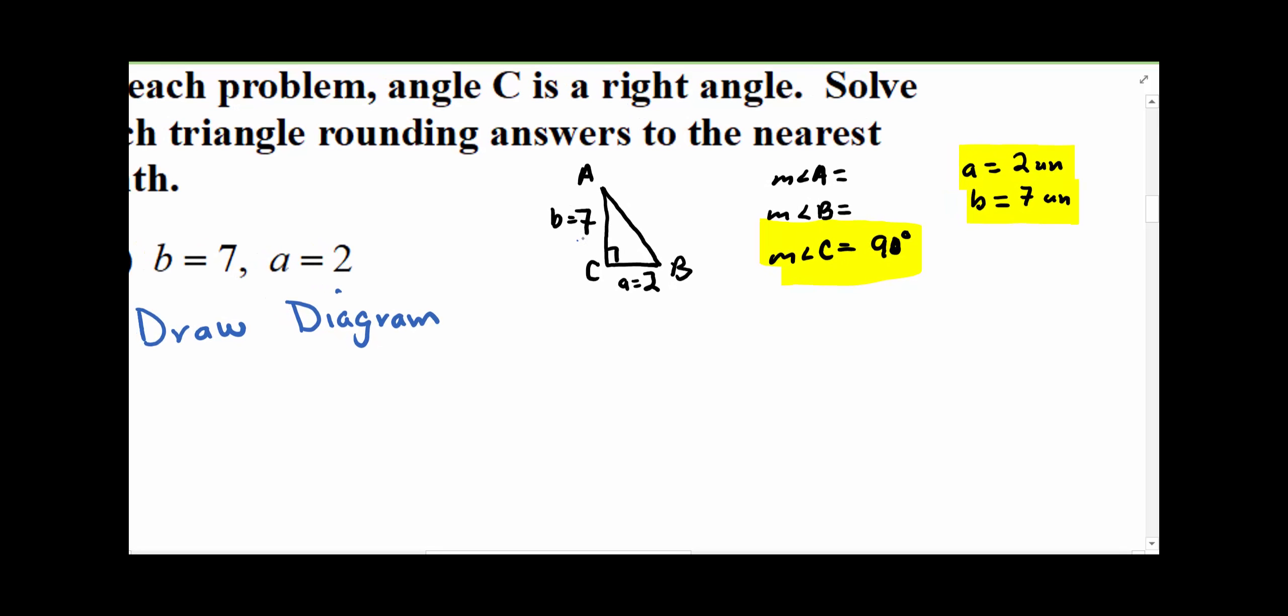So let's see, this one's going to be easy, because here's a side, here's a side, so 7 squared plus 2 squared gives you the hypotenuse.